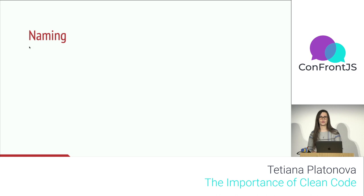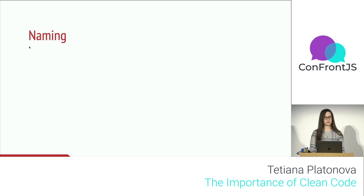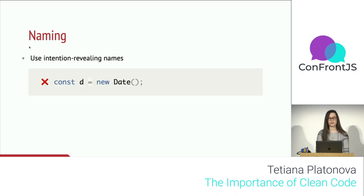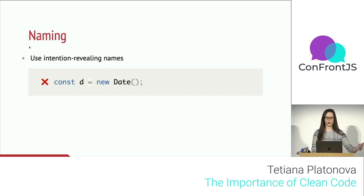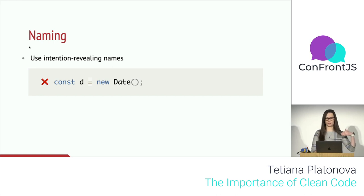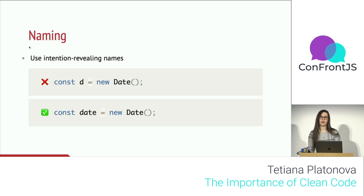The most important thing in code is naming — something we do on a daily basis no matter what we write, whether classes, functions, methods, or simple variables. The first rule is to use intention-revealing names. For example, a variable named 'd' that holds a date seems okay at the point of assignment, but further in the code you lose track of what it holds and have to scroll back up. To avoid this, name variables in a way that provides information about what they hold.